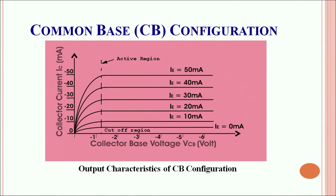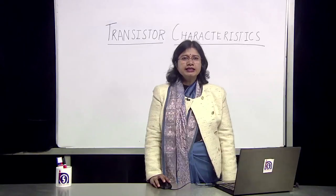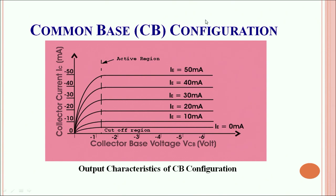Let's understand the common base configuration output characteristics. The collector current IC is plotted as a function of the collector-base voltage, keeping the emitter current constant. For a particular value of the emitter current, the collector current shows a rise initially with an increase in the collector-base voltage and soon saturates. Any further change in the collector-base voltage does not increase the collector current — the transistor is saturated or in the cutoff region. The region prior to this is the active region where the transistor tends to operate.